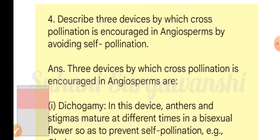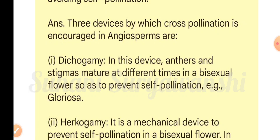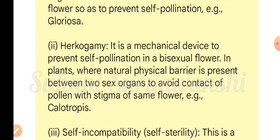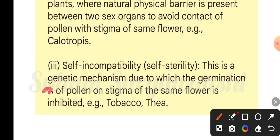Question four: describe three devices by which cross-pollination is encouraged in angiosperms by avoiding self-pollination. First is dichogamy: anthers and stigmas mature at different times in a bisexual flower so as to prevent self-pollination, for example Gloriosa. Second is herkogamy: a mechanical device where a natural physical barrier is present between two sex organs to avoid contact of pollen with the stigma of the same flower, for example Calotropis. Third is self-incompatibility: a genetic mechanism due to which the germination of pollen on the stigma of the same flower is inhibited, for example tobacco, tea.